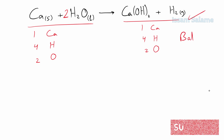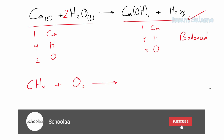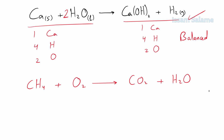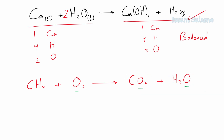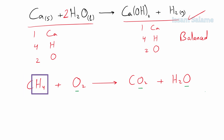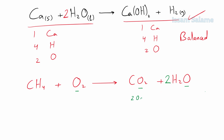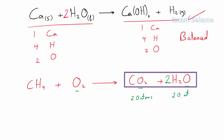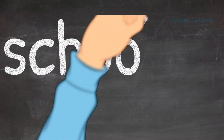Another example: the burning of methane with oxygen to produce carbon dioxide and water. Since oxygen is found in two substances on the right side, we avoid starting with it. We have one carbon on each side — balanced. We have four hydrogens on the left and two on the right, so multiply the water molecules by 2. Now we count four oxygen atoms on the right side, so multiply the oxygen molecules on the left by 2, and the equation is balanced.